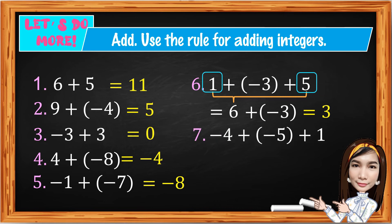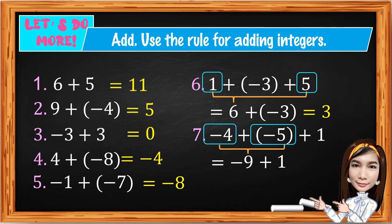Number 7: Negative 4 plus negative 5 plus 1. With 2 or more addends, combine the same signs first: negative 4 plus negative 5 gives negative 9. Then bring down plus 1. Unlike signs: subtract 9 minus 1 gives 8. Keep the sign of the bigger absolute value, which is negative 9. The answer is negative 8.